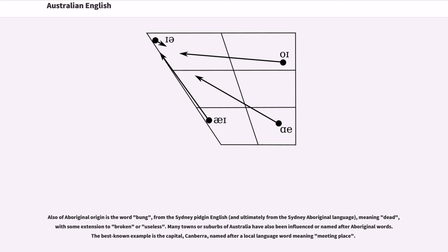Also of Aboriginal origin is the word bung, from the Sydney Pidgin English, and ultimately from the Sydney Aboriginal language, meaning dead, with some extension to broken or useless. Many towns or suburbs of Australia have also been influenced or named after Aboriginal words. The best known example is the capital, Canberra, named after a local language word meaning meeting place.